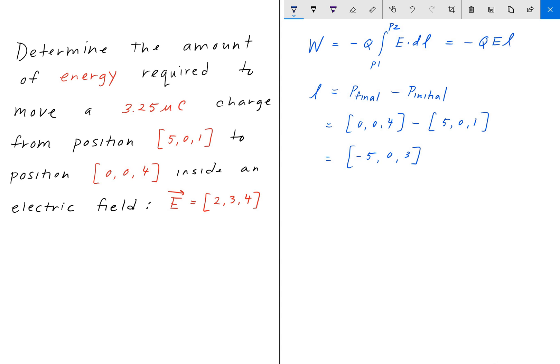And Q is given, E is given, so then the work done is equal to minus 3.25 microcoulombs. And then you have the E field here, and then you're going to do the dot product with minus 5, 0, 3.